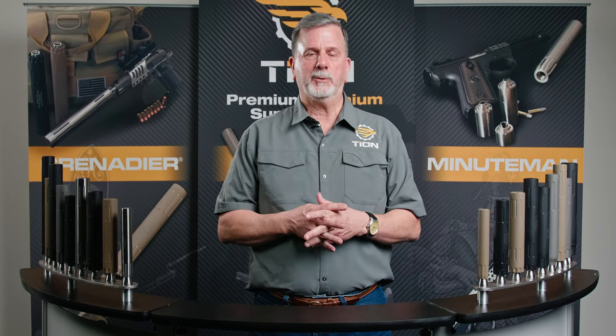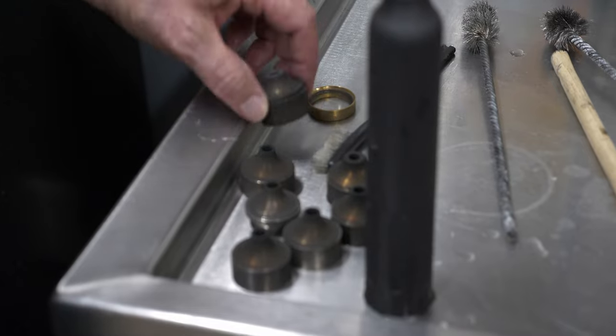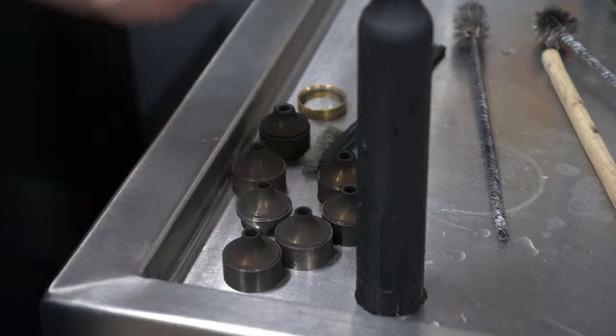We had a customer in West Virginia who had two of our suppressors and he reloaded. Long story short, he came to our facility. We had to discover why the first baffle looked like a moon crater from all the gouging in it and none of the rest of the suppressor was damaged in any way shape or form. The net result of that was faulty reloading.